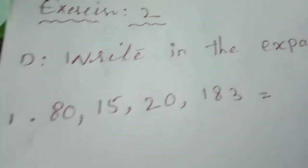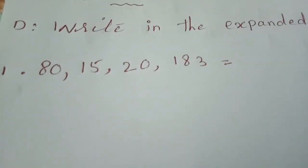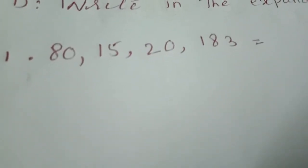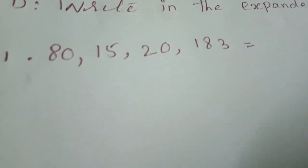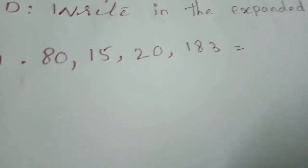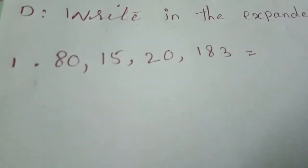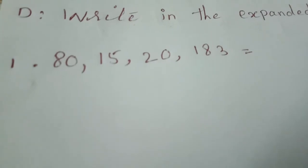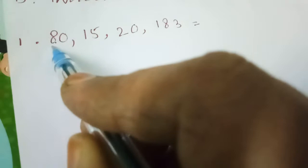Exercise number 2D: write in the expanded form. The first number is 80 crore 15 lakh 20,183. If we know how many zeros are in crores, ten crores, lakhs, ten lakhs, thousands, ten thousands, hundreds and tens, we can write it very easily. To avoid any confusion, always start writing the number in expanded form from the left side.